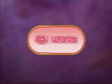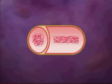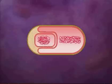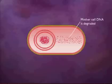Next, the DNA divides into two complete copies and the mother cell membrane invaginates to form the developing forespore. The mother cell membrane continues to grow and engulfs the developing spore. The developing spore is now surrounded by two membrane layers.